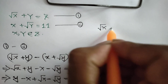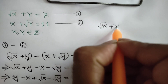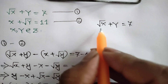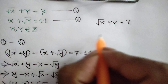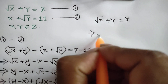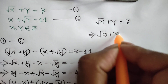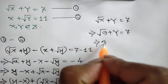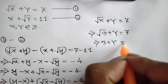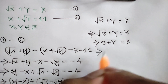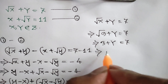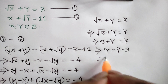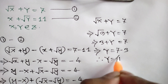From equation one, square root of x plus y is equal to 7, and here x equals 9, so we can write square root of 9 plus y is equal to 7. Square root of 9 is 3, so 3 plus y is equal to 7. Taking 3 to the right side we get y is equal to 7 minus 3.